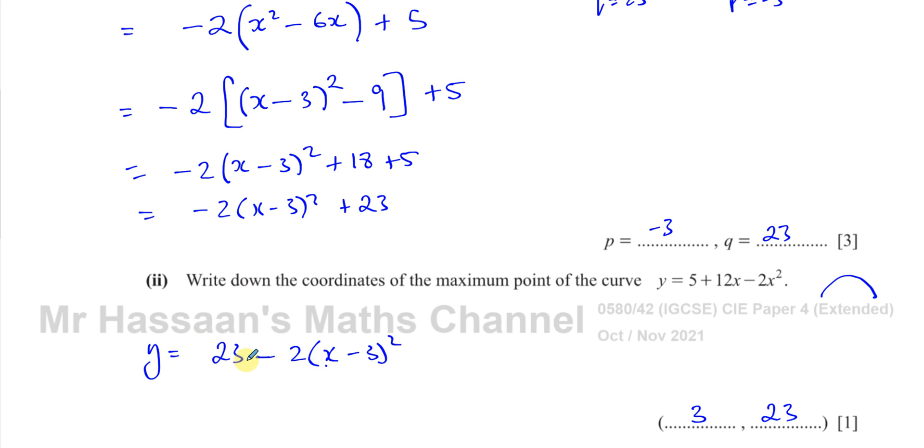Okay, so the vertex is always going to be the x value that makes this bracket 0. And then the number left on the outside. That's the y value. So 3, 23 is the coordinates of the vertex of this point.